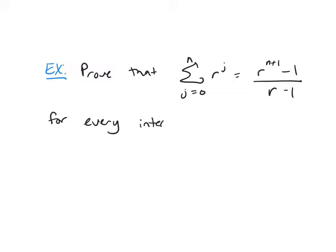Now what we want to do is prove our formula that we saw last time using induction. Prove that the summation from j equals 0 to n, r to the j equals r to the n plus 1 minus 1 over r minus 1 for every integer n greater than or equal to 0 and every real number r except 1.